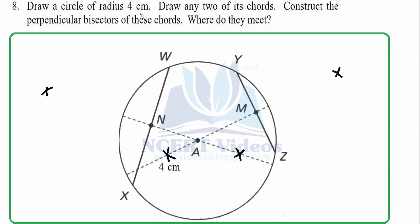Question 8: Draw a circle of radius 4 cm, then draw any two chords — WX and YZ. Construct the perpendicular bisector of each chord. Open the compass slightly greater than half the chord length, cut arcs from both ends of WX to get two intersection points, and connect them. Do the same for chord YZ: cut arcs from Y and Z, get two points, and connect them.